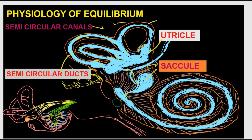The receptors for equilibrium are placed in the saccule, the utricle, and in the ampulla of the semicircular canals. The bipolar neurons whose peripheral processes are in the utricle, saccule, and semicircular ducts give rise to central processes forming the superior and inferior Scarpa's ganglia. These join with the cochlear part and together form the vestibulocochlear nerve — cranial nerve number eight.